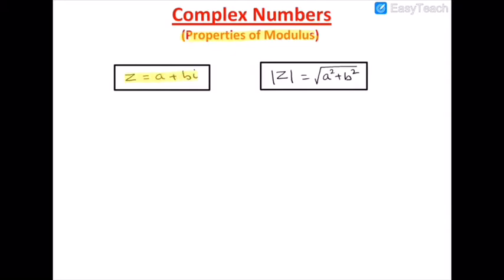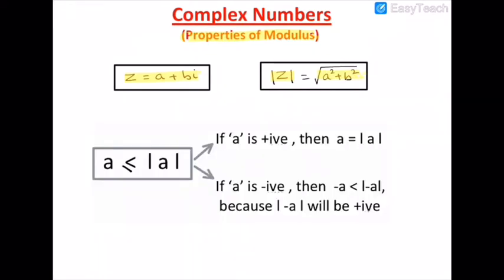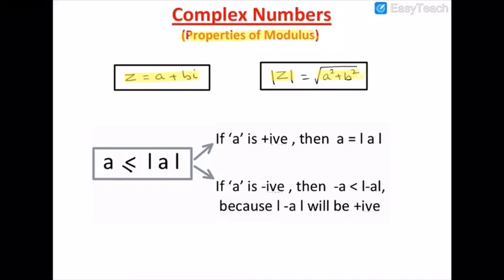As we already know, the modulus of a complex number a + bi is the square root of a² + b². We also know that any real number a is always less than or equal to its modulus. If a is positive, it equals its modulus because modulus is always positive. But if a is negative, the modulus is still positive, so negative a will be less than the modulus of negative a. Therefore, a will always be less than or equal to its modulus.